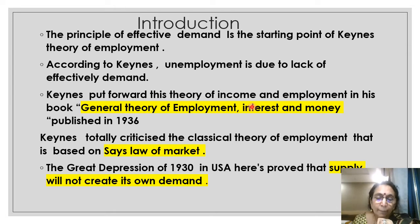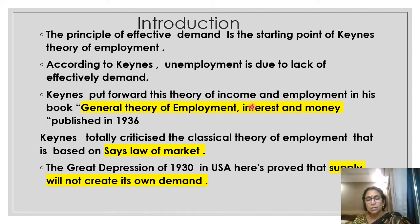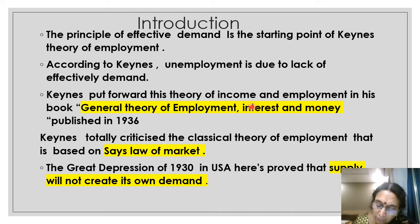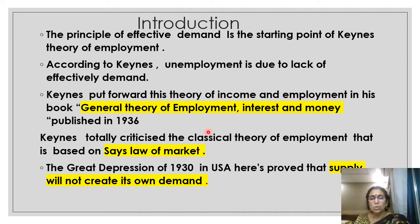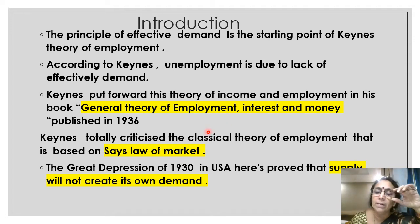Why did Keynes become world famous? Because he gave a solution to the long-standing problem of the Great Depression of 1930, which crippled the western countries for around five years. Keynes challenged the classical theory of employment. The classical theory of employment is based on Say's Law of Market.